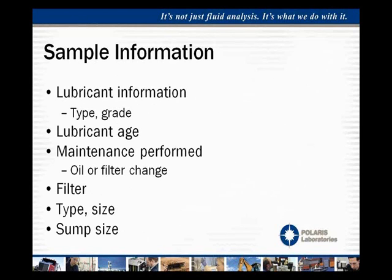We also look at the lubricant information — the type, the grade, the specific product, as well as its age. Age becomes important when we start doing trending. If we're looking at viscosity increasing as it starts to oxidize, it's very important to know how old it is. Is it oxidizing at a rate where it's increasing five or six points over 300 hours, or increasing over 1,000 hours? Knowing this can help determine how much longer it can last in the system.